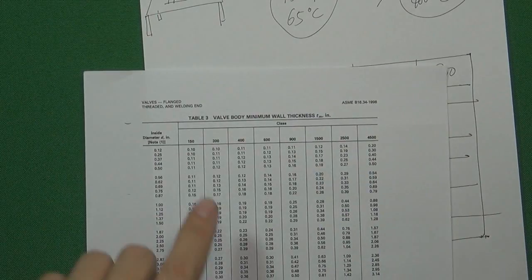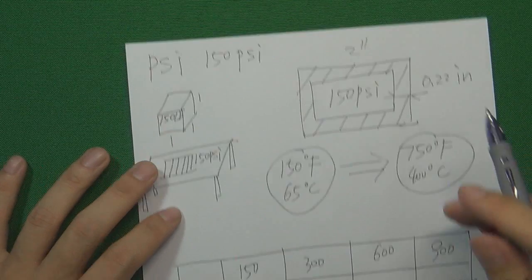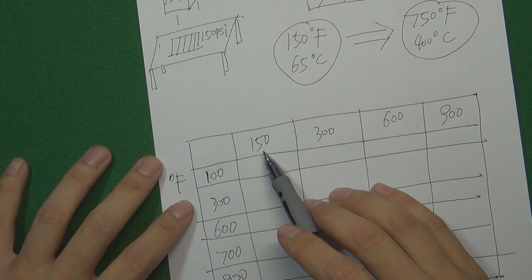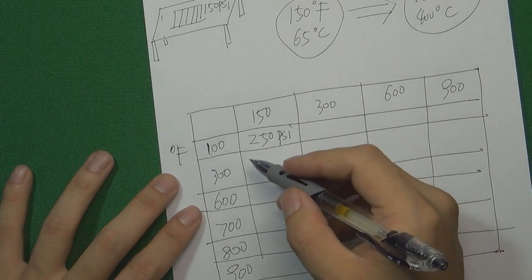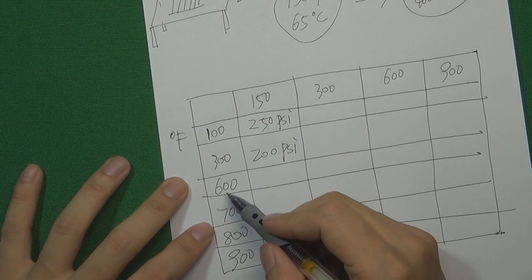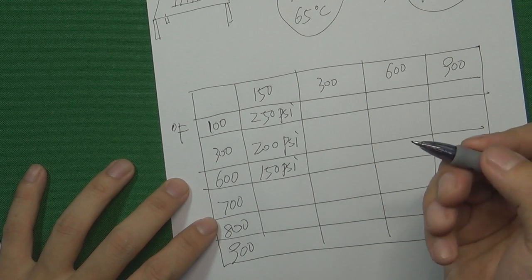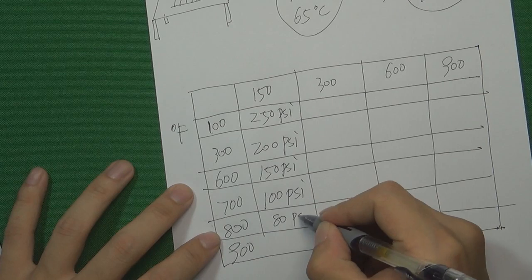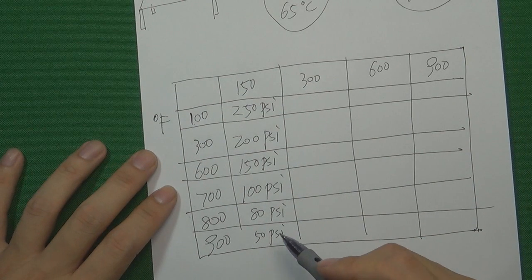For example, using the wall thickness table we designed a 2-inch valve with 0.22-inch wall thickness. In this temperature-pressure rating table, at 100°F, the valve may be able to hold around 250 psi — more than 150, because the temperature is low. At 300°F, it can hold maybe 200 psi. At 600°F, maybe just 150 psi. At 700°F, maybe just 100 psi. At 800°F, maybe 80 psi. At 900°F, maybe just 50 psi. So we call this the pressure-temperature rating table.